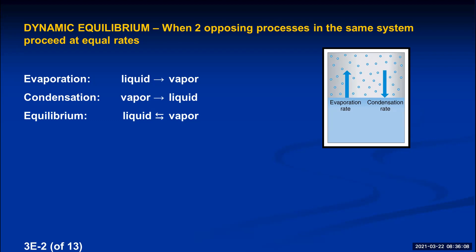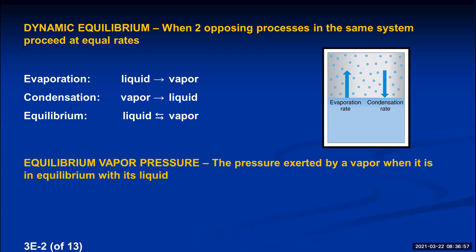A property of vapor we haven't discussed yet: when gas molecules are in a container and moving in straight-line motion, they collide with the inside walls and exert a force on them. This constant bombardment of vapor molecules on the inside of any container is called pressure — that's what keeps a basketball expanded, and the same for car tires. The vapor molecules in a closed container exert pressure, and the pressure exerted by vapor when it's in equilibrium with its liquid is called equilibrium vapor pressure.